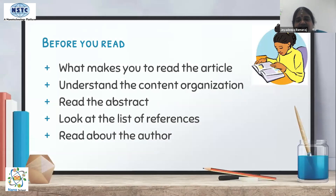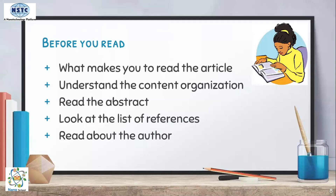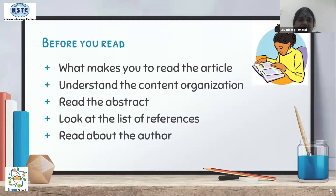Then understand the content organization, because every researcher has their own way of writing a report. Even though journals have guidelines on how topics should be organized, the writer's style also influences this. Try to understand how the content is organized in the research paper. Then read the abstract first — the abstract gives all information about the research study in a paragraph of 150 to 200 words, covering all aspects of the study.